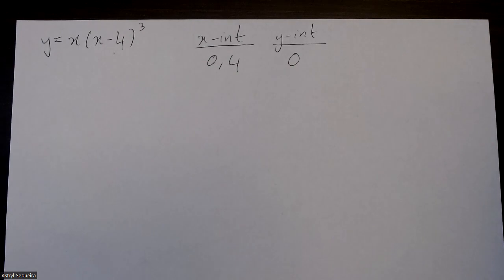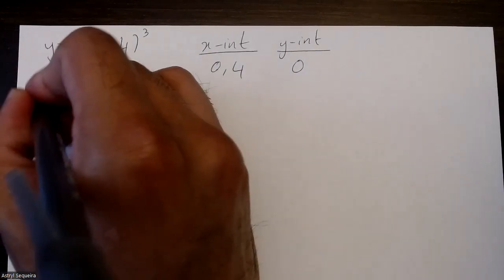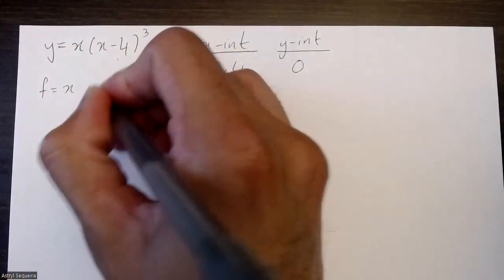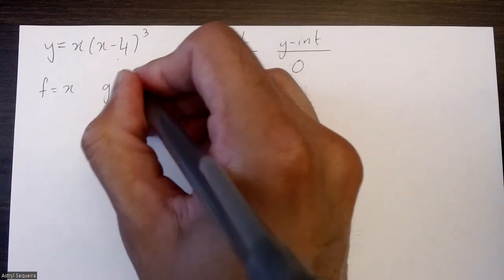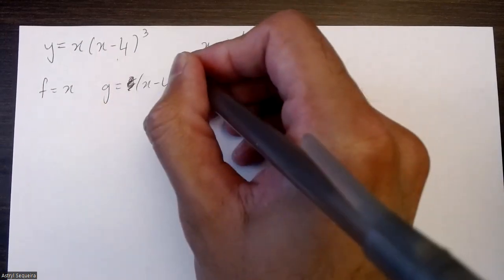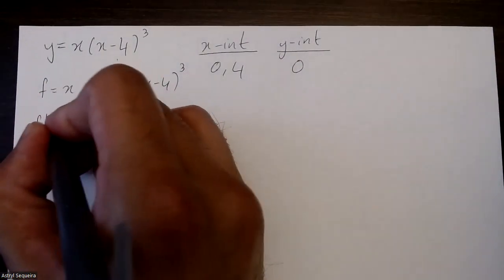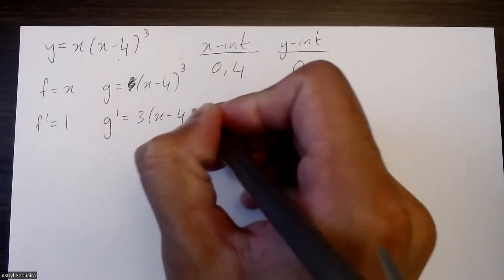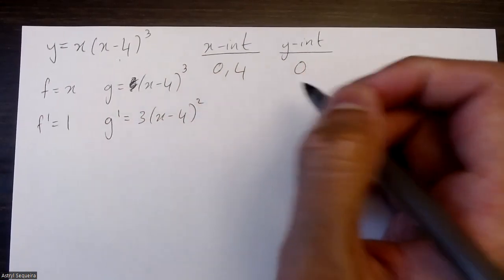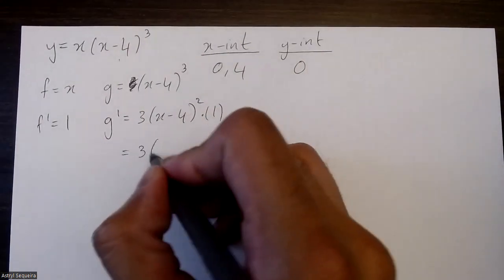Now we can start with the first derivative and finding the critical points. We're going to use the product rule. f equals x, g equals x minus 4 to the power of 3. f prime is just 1. g prime is 3(x minus 4) squared — by chain rule times 1, so you don't need the chain rule here.